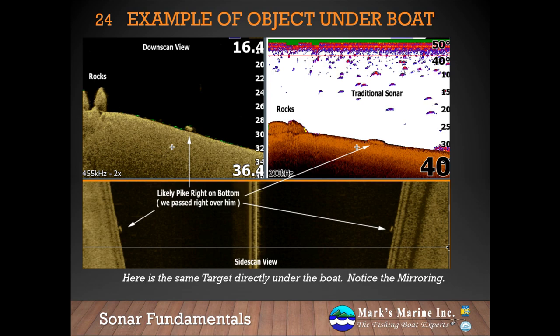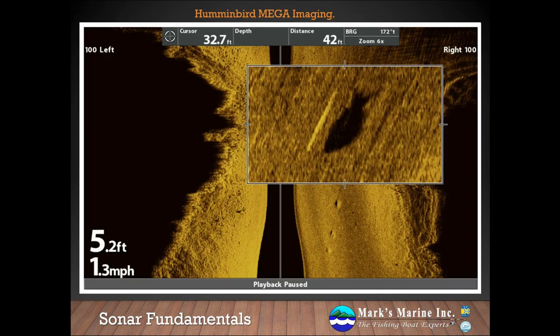However, the oblong body and the size of the target makes it likely that this is a pike laying right down in the mud, right off this rock pile, right at the edge of a steep slope, waiting to ambush fish.